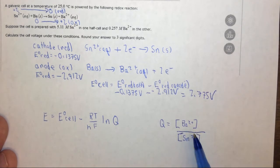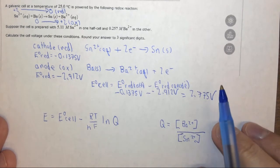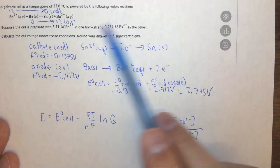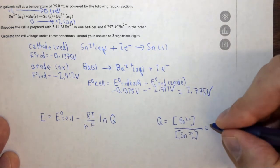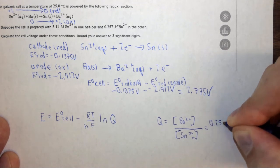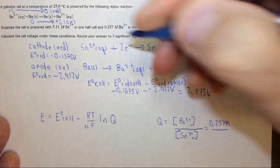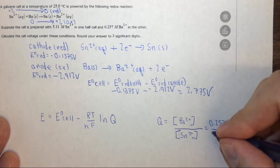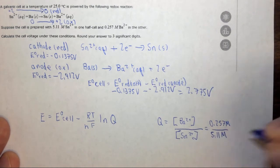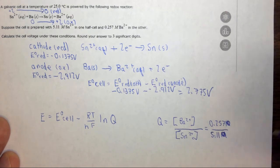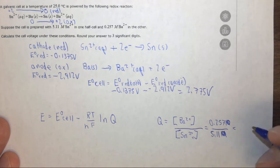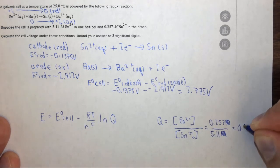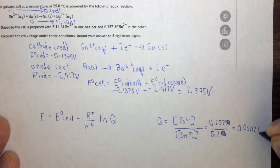Now we do need to still solve for Q, but if we look back to the problem we're actually given both of the concentrations, so we simply just plug them in. So barium 2 plus is 0.257 molar, and tin 2 plus is 5.11 molar, and you can pretty much ignore units in these Q's because if they're molar squared or whatever you can just ignore them. So in this case Q equals 0.0294.